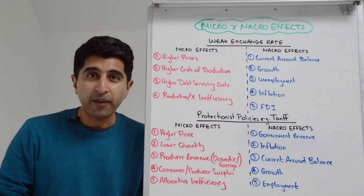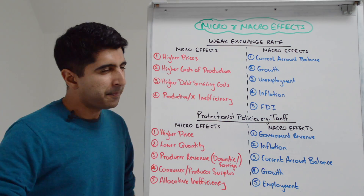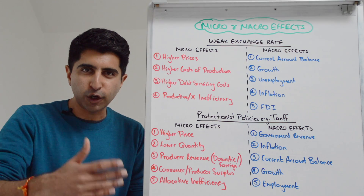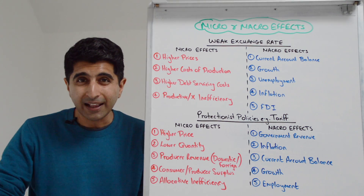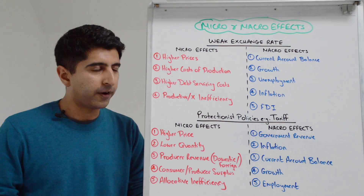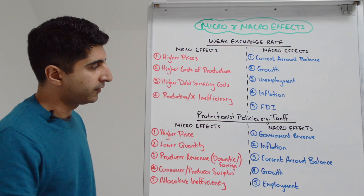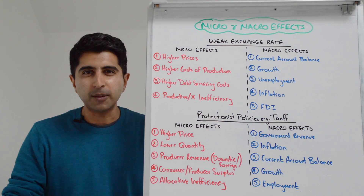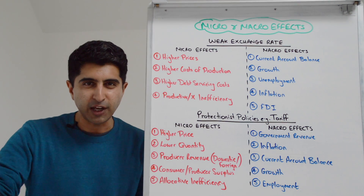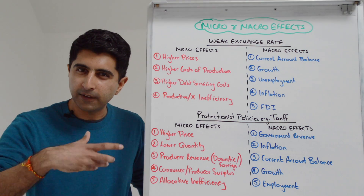On the micro side, we can worry about the impacts of higher prices generally on consumers and on firms. You can worry about the higher cost of production that firms are facing and what that means for their profitability. You can also worry about firms who have debts in foreign currency — a weak exchange rate makes servicing those debts far more expensive. A different route is to talk about how investment back into the firm might be reduced as a result of that. And then there is the potential inefficiency of domestic firms, specifically productive and X-inefficiency, with firms allowing costs to rise because of complacency.